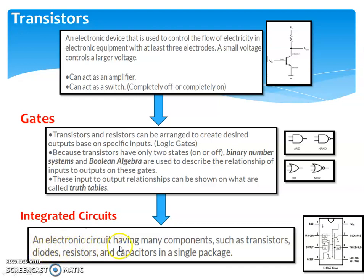An integrated circuit has many components such as transistors, diodes, resistors, and capacitors in a single package. All these components available in one single package is known as an integrated circuit. Here in this figure I have shown the LM555 IC, which has a combination of transistors, resistors, trigger circuits, and gates — all available on a single chip, fabricated for a single purpose. That is called an integrated circuit.